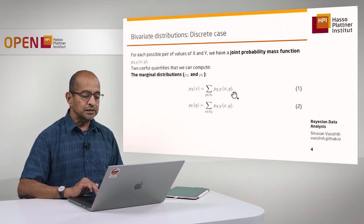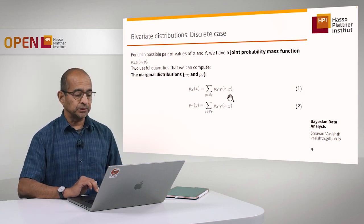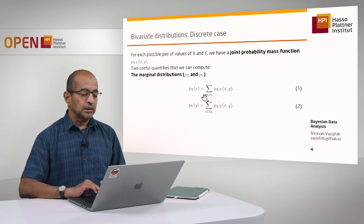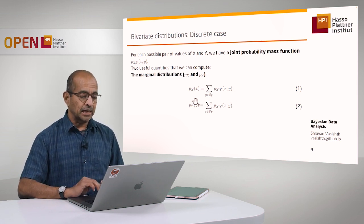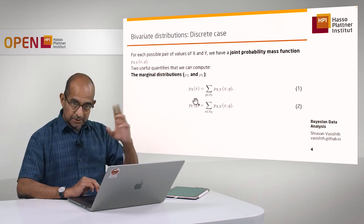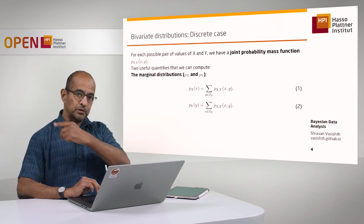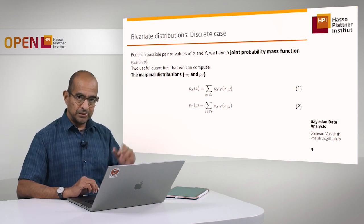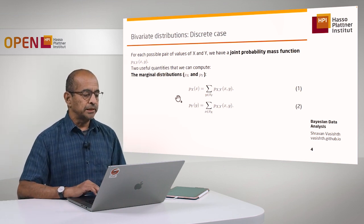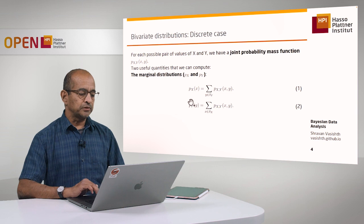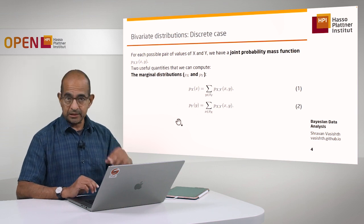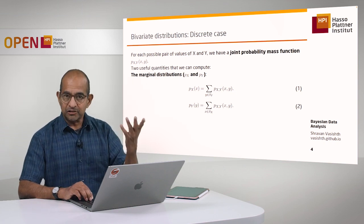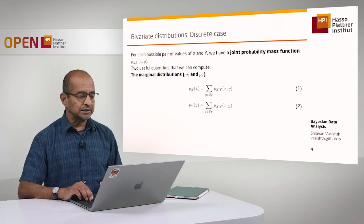I look at the joint distribution table and sum up all the values — all the y values — that I have there. Once I sum up all the joint probabilities, I'm marginalizing out all the y values, and I get the marginal probability mass function for x. You can do the same thing for y by marginalizing out the x values.